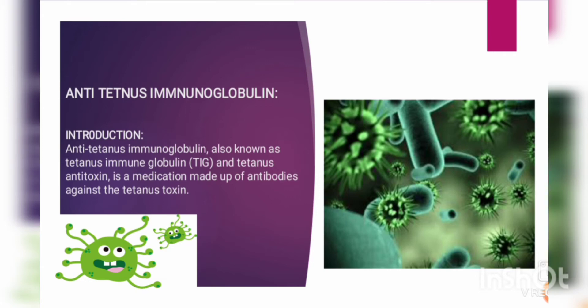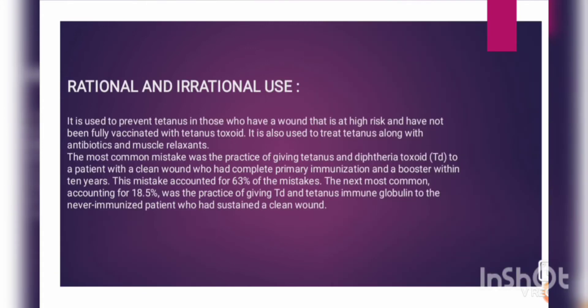Anti-tetanus immunoglobulin, also known as tetanus immunoglobulin and tetanus antitoxin, is a medication made up of antibodies against the tetanus toxins. It is used to prevent tetanus in those who are at high risk and have not been fully vaccinated with tetanus toxoid. It is also used to treat tetanus along with antibiotics and muscle relaxants, because the muscles are badly affected.